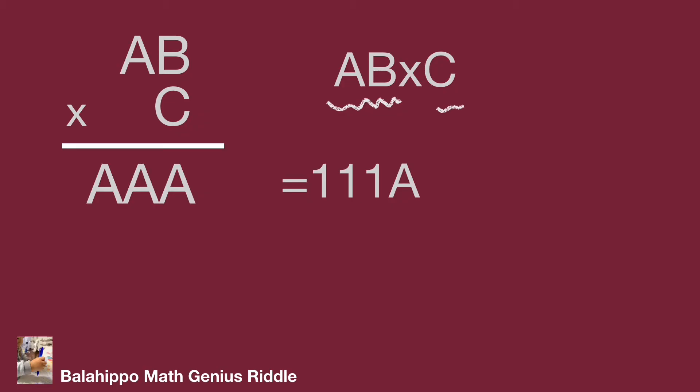This is a good finding. So adjust 111A as a 2-digit item times 1-digit item. After that, try to factorize 111A equal to 3 times 37A. And we find 111A equal to AB times C.